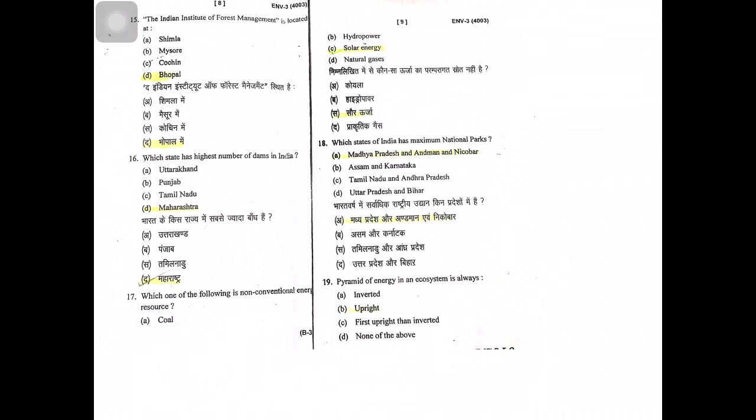Which state of India has maximum number of national parks? Madhya Pradesh and Andaman Nicobar. Pyramid of energy in an ecosystem is always upright.